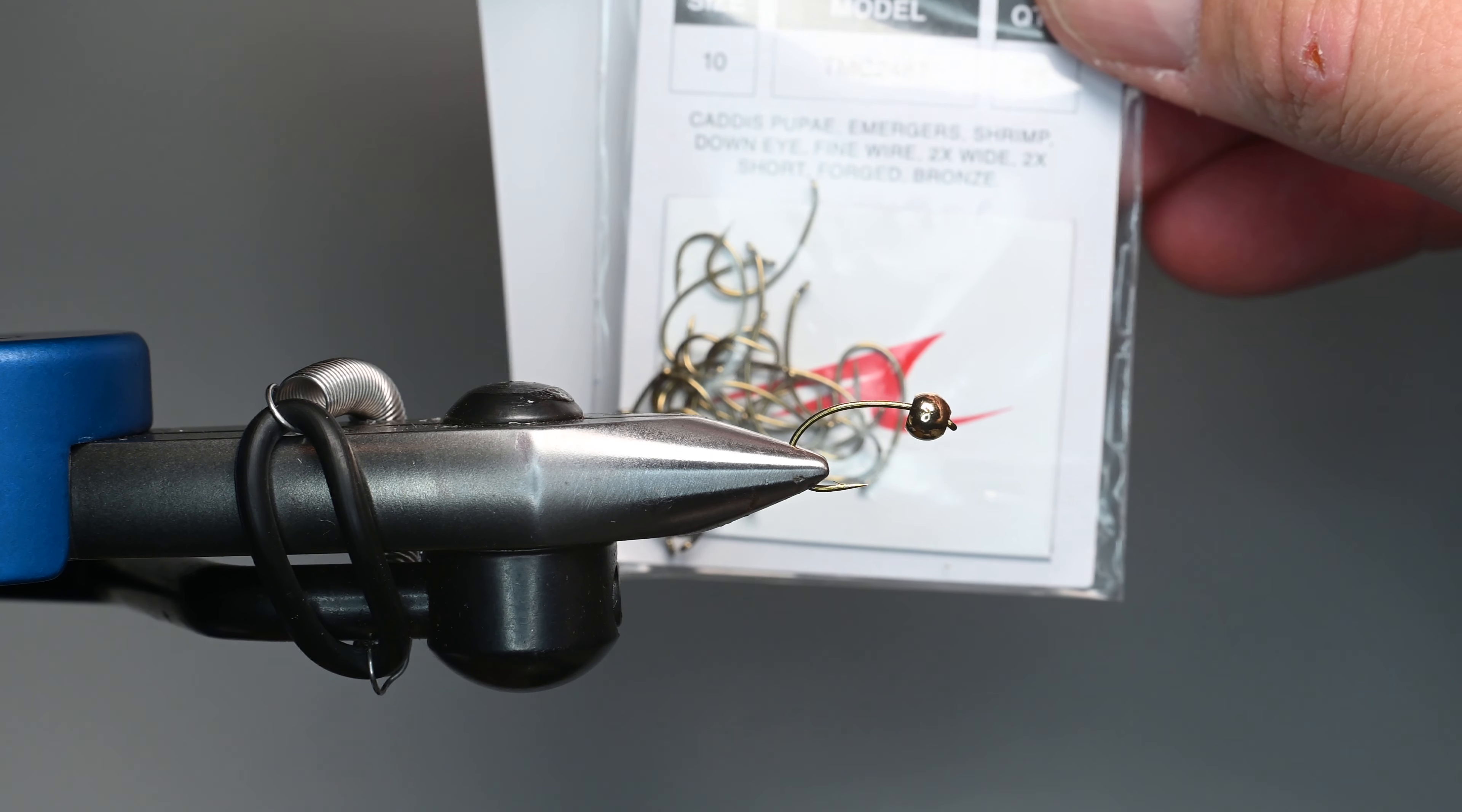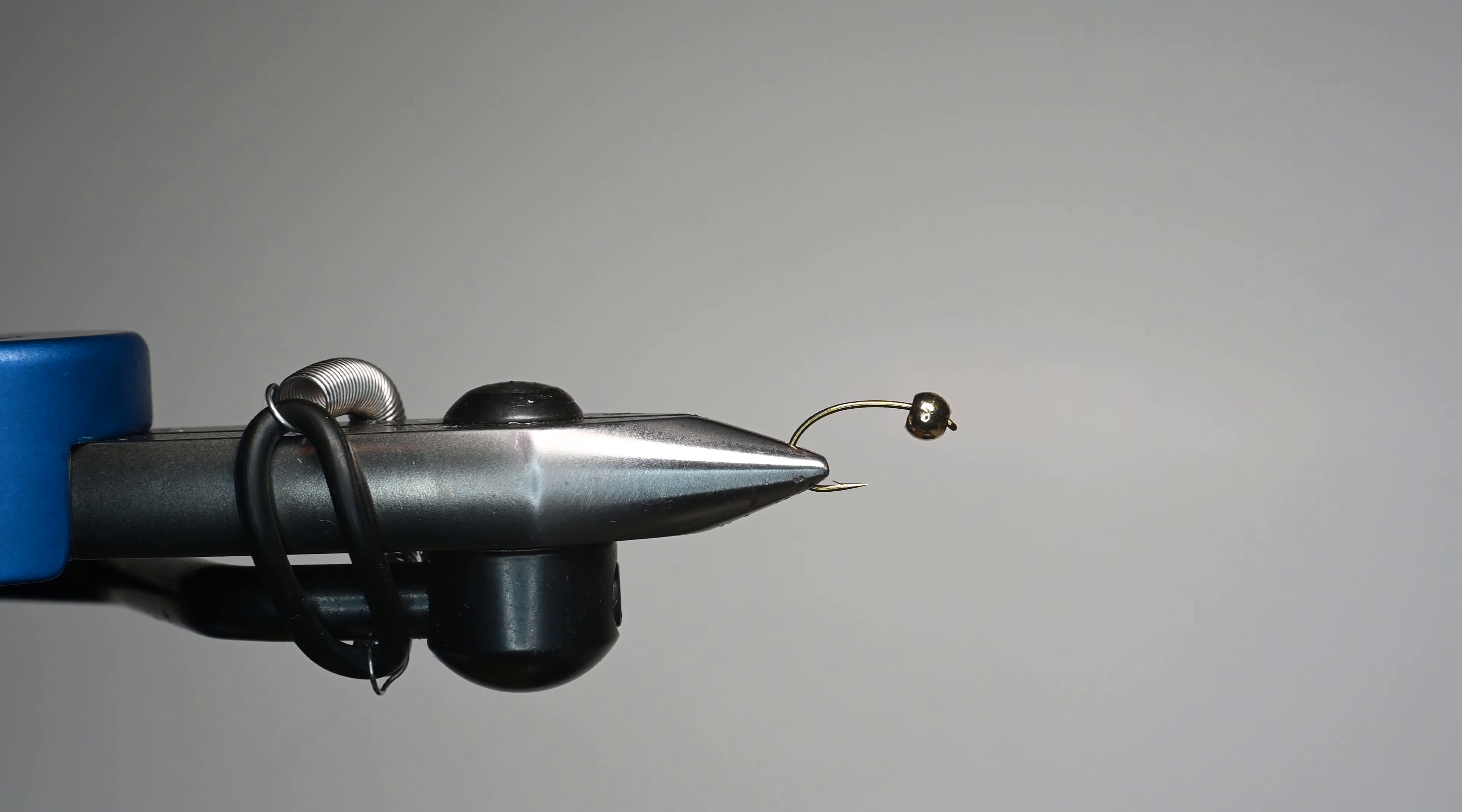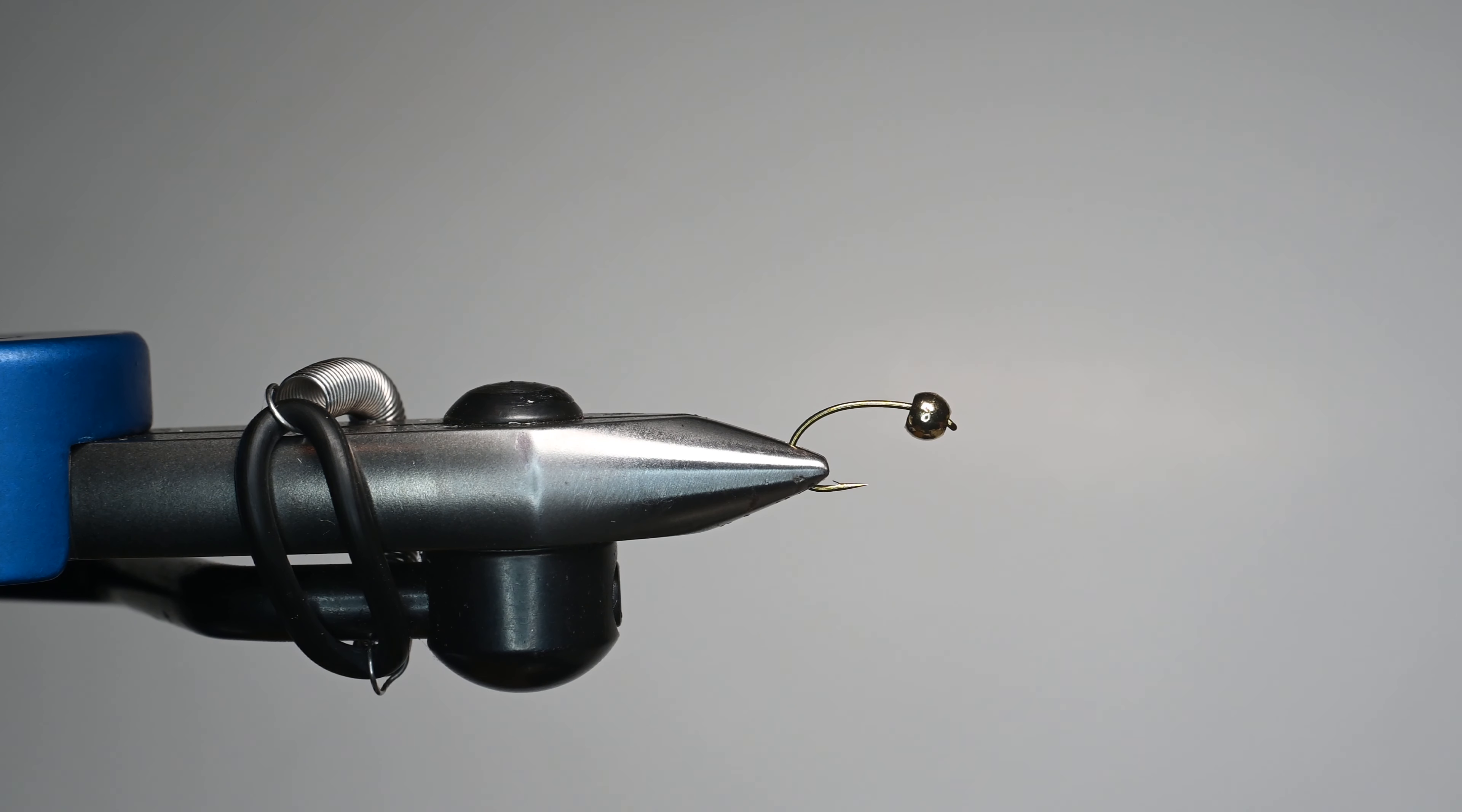We're using a TMC 2047. This is a size 10. Usually nymph 14s. You want to step it up just a little bit. I'm also going with a heavier tungsten bead. This is a 4mm. It barely fits on.